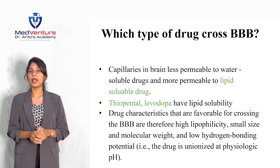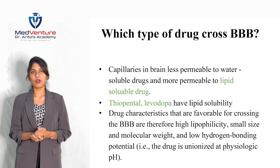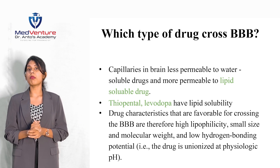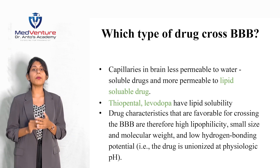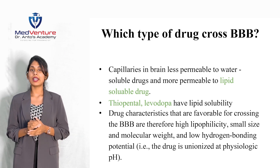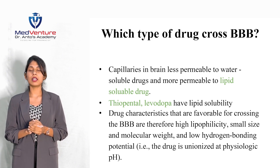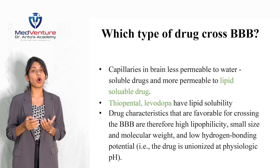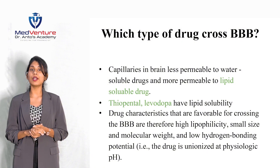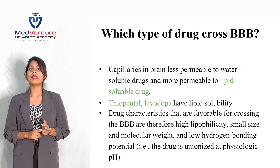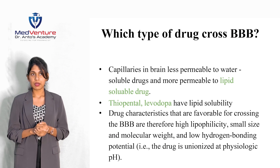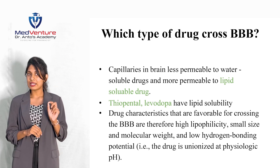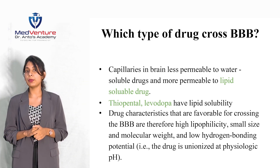Which type of drug crosses the blood-brain barrier? Capillaries in the brain are less permeable to water-soluble drugs and more permeable to lipid-soluble drugs. Lipophilic drugs — lipid-loving drugs — cross the blood-brain barrier more readily than hydrophilic drugs. Drug characteristics favorable for crossing the blood-brain barrier include high lipophilicity, small molecular size, low molecular weight, and low hydrogen bonding potential.